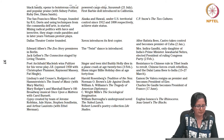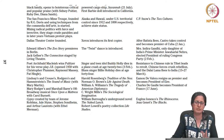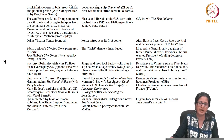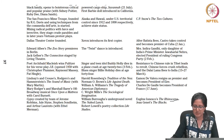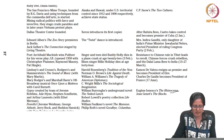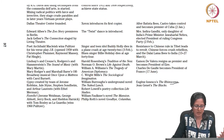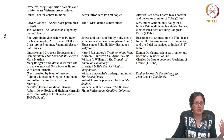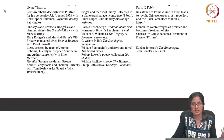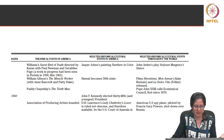Edward Albee's The Zoo Story premieres in Berlin — and it is an interesting twist that it premieres not in America, but in Berlin. Ionesco's Rhinoceros and Jean Genet's The Blacks also appear. Charles de Gaulle becomes the president of France. Multiple things are happening in a way that the struggle which is captured in The Zoo Story or in A Raisin in the Sun feels more and more real.